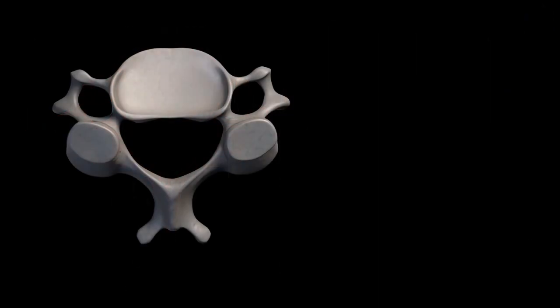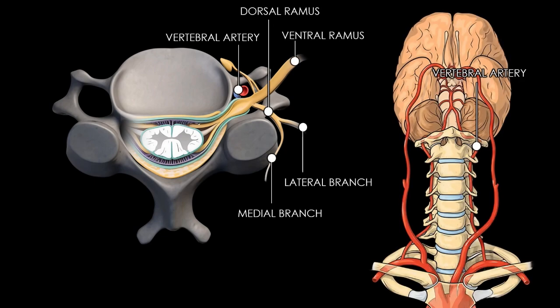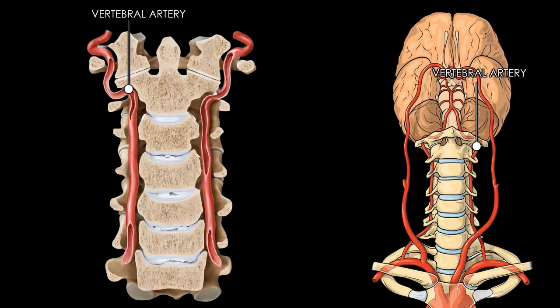The vertebral artery originates from the subclavian artery and ascends through the transverse foramina of the cervical vertebrae, typically beginning at C6 and continuing upward through C5 to C1. After exiting the transverse foramen of C1 atlas, it curves medially and posteriorly, crossing the posterior arch of the atlas in the suboccipital triangle. It then pierces the atlanto-occipital membrane and dura mater, entering the cranial cavity through the foramen magnum.